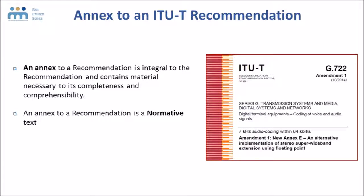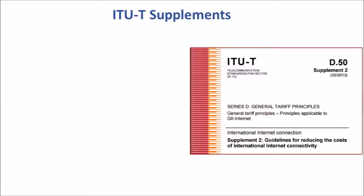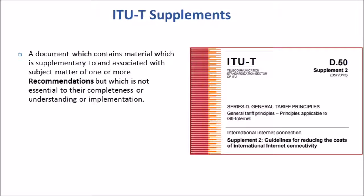We also approve non-normative documents at the ITU-T. Examples of those are ITU-T supplements. A supplement is a document that contains material supplementary to an associated recommendation, but it's not essential to the completeness of understanding or implementation of that standard. That's why an ITU-T supplement is non-normative and agreement by the study group is sufficient — we don't need to go through the traditional or alternative approval processes.